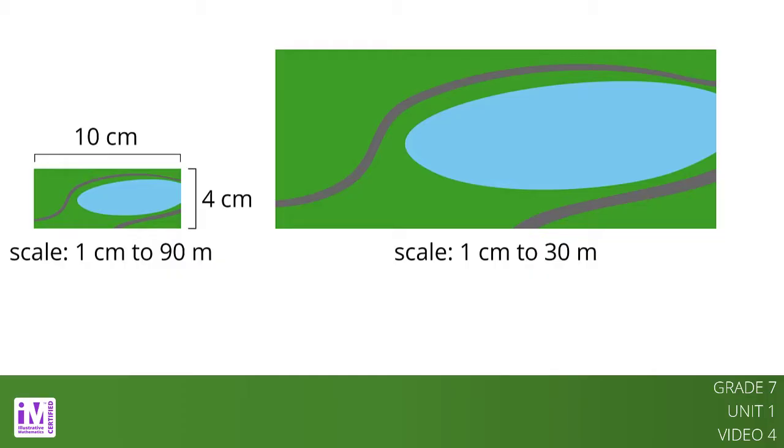Another way to find this answer is to think about how the two different scales are related to each other. In the first scale drawing, 1 centimeter represented 90 meters. In the new drawing, we would need 3 centimeters to represent 90 meters. That means that each length in the new scale drawing should be 3 times as long as it was in the original drawing.